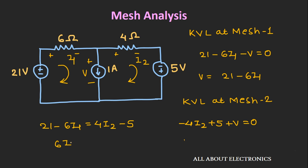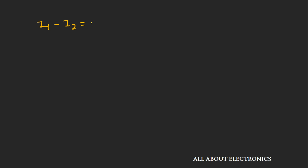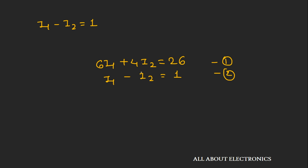Also, current i1 flows from top to bottom through the 1A current source, while i2 flows from bottom to top, so we can write i1 − i2 = 1A. We now have two equations. Multiplying equation 2 by 4 and adding to equation 1 gives i1 = 3A, and substituting back gives i2 = 2A. You can pause the video and try to derive these values yourself.